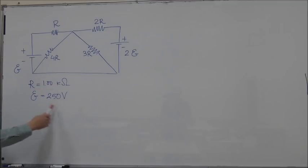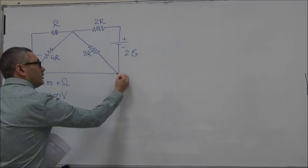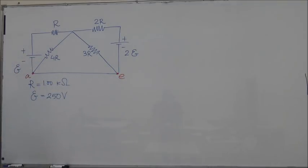R is equal to one kilo-ohm and the EMF is 250 volts. The question is, if we label these two points as A and E, what is the magnitude and direction of the current flowing in the wire AE?